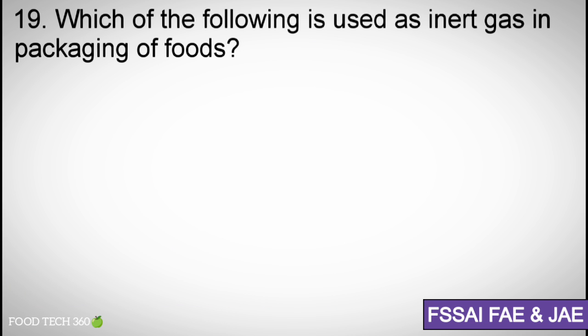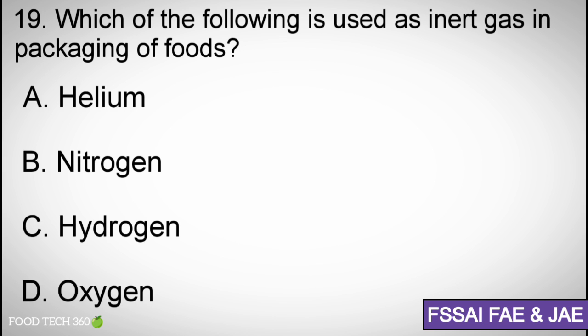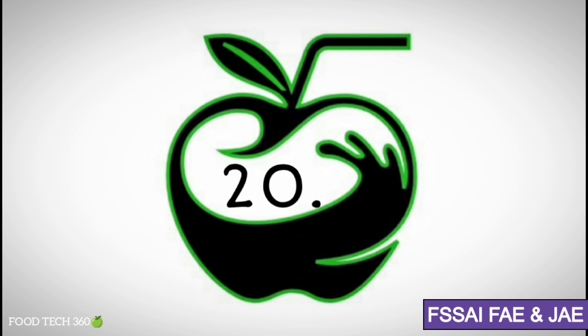Question number 19. Which of the following is used as inert gas in packaging of foods? Options A. Helium, B. Nitrogen, C. Hydrogen, D. Oxygen. Correct answer B. Nitrogen.